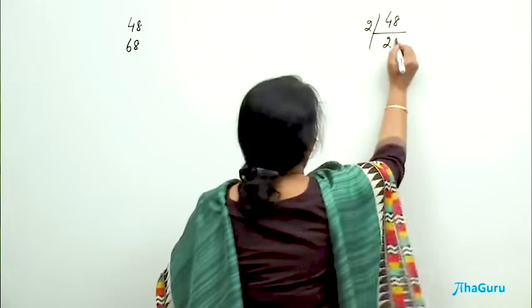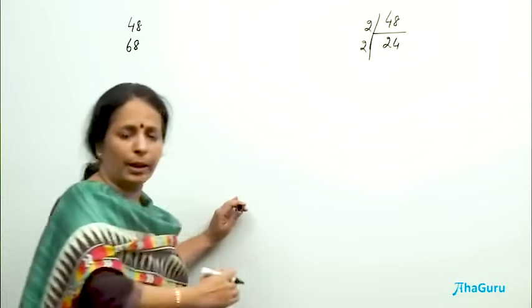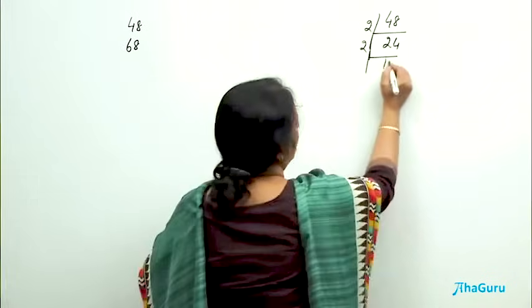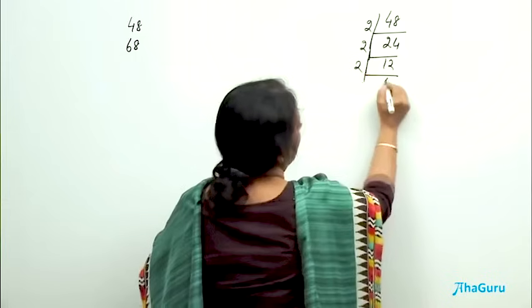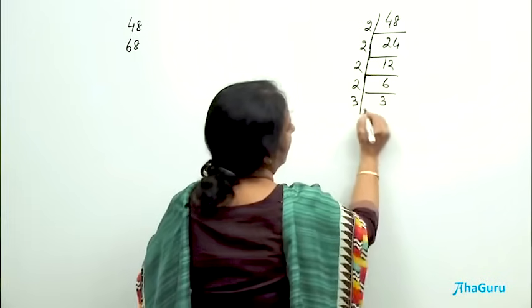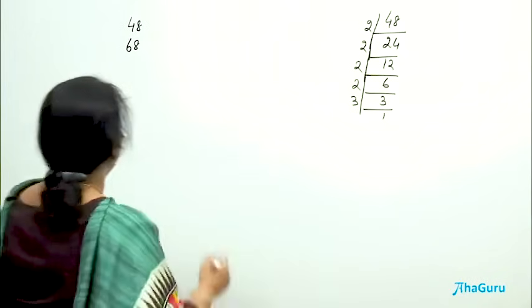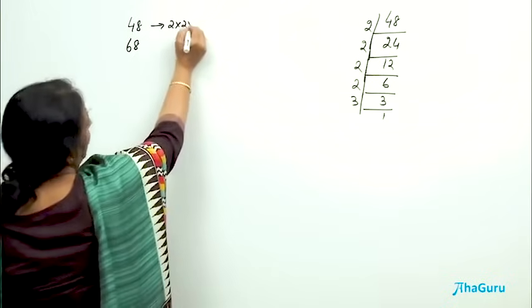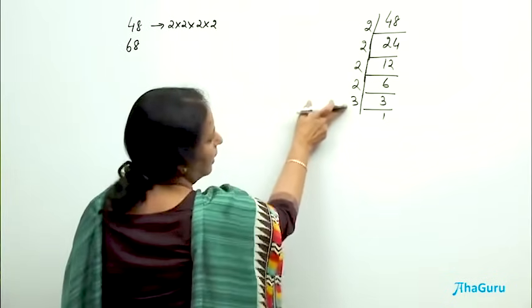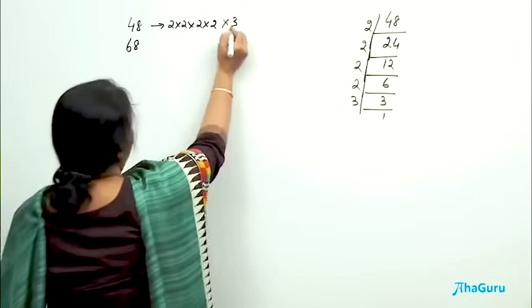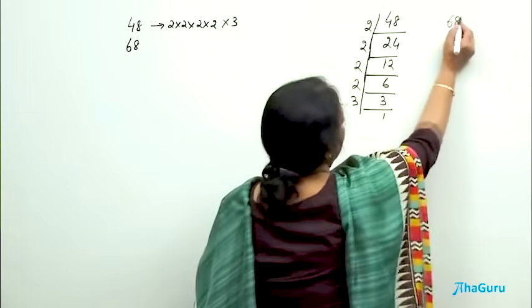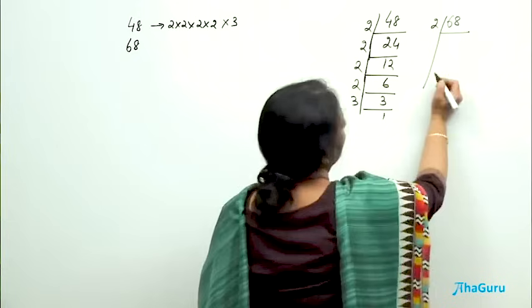So 24, then I go ahead, continue with 2 only till I am able to and then go to the next numbers. So this goes 12 times, again 2, 6 times, again 2, 3 times, then 3 and then 1. So 48 can be written as 2 into 2 into 2 into 2, 4 times, 2 to the 4 is 16, 16 into 3 is 48. Similarly, I can find for 68, start with 2, what do I get? 34.